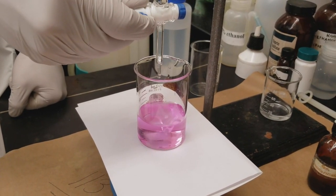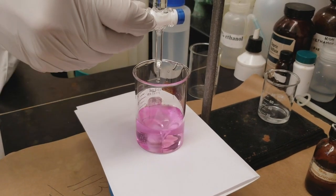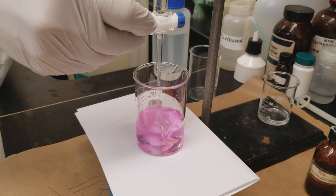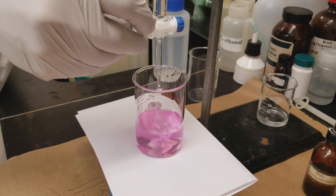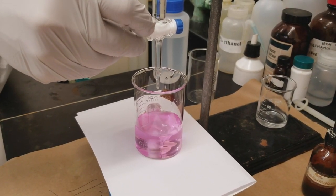So once it starts to fade, you want to slow down your addition. So we're at more of a faint pink now, so we want to adjust our flow rate so that it's nice and slow.